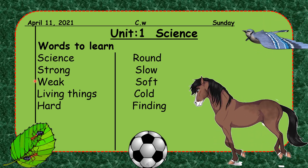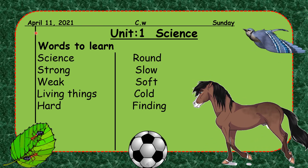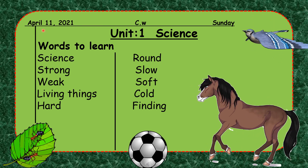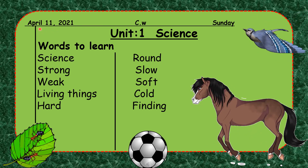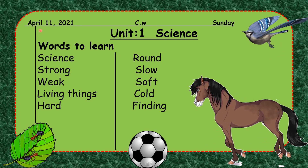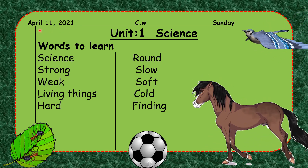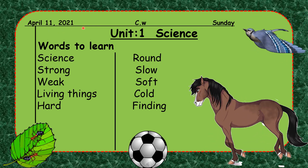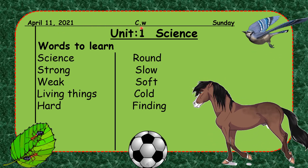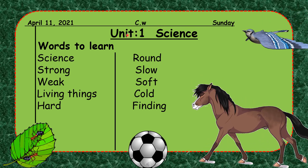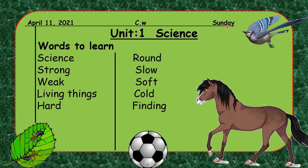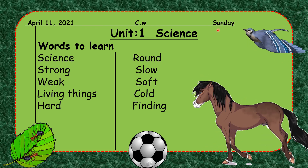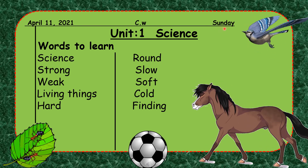On the top left corner, you have to write the date in the same format I have written — today is April 11, 2021. In the center top, write 'CW' for classwork. On the right top corner, write the day — and today is Sunday.